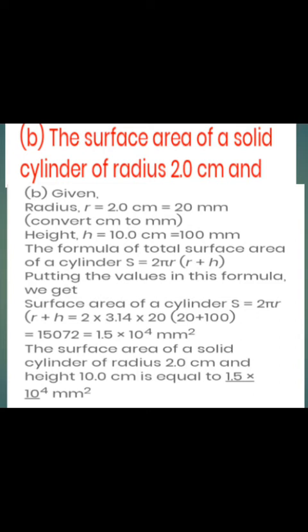Some people say numericals of physics are difficult, but if your basic concepts are strong, you can solve any numerical in math, physics, or chemistry. For example: find the surface area of a solid cylinder of radius 20 cm and height 10 cm. If you know the formula — total surface area = 2πr(r + h) — there is no difficulty. Convert units: 20 cm = 200 mm, 10 cm = 100 mm. Calculate: result is 15 × 10⁴ mm².